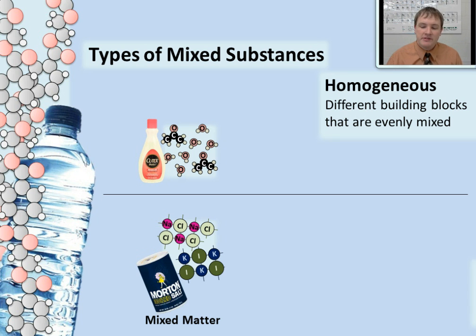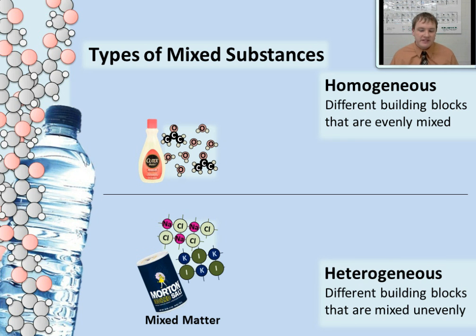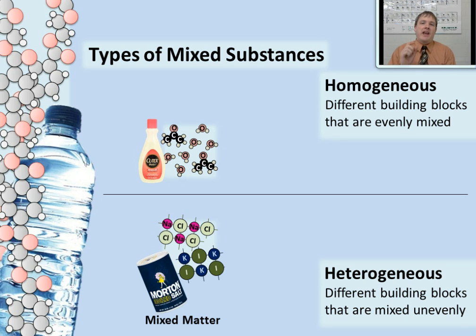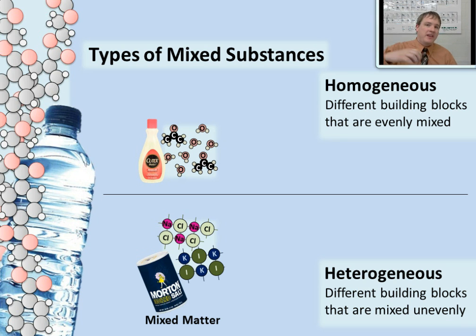A heterogeneous mixture, on the other hand, is made up of different building blocks that are mixed unevenly. Here I have two different crystals of salt — those crystals make up chunks that take up a fair amount of space each. Because there are different chunks in different areas that are different substances, it makes it a heterogeneous mixture. When you have more than one crystal substance, they can never mix evenly with each other, because crystals are repeating patterns that take up chunks of space. So if you have more than one crystal mixed together, it's always going to be a heterogeneous mixture.